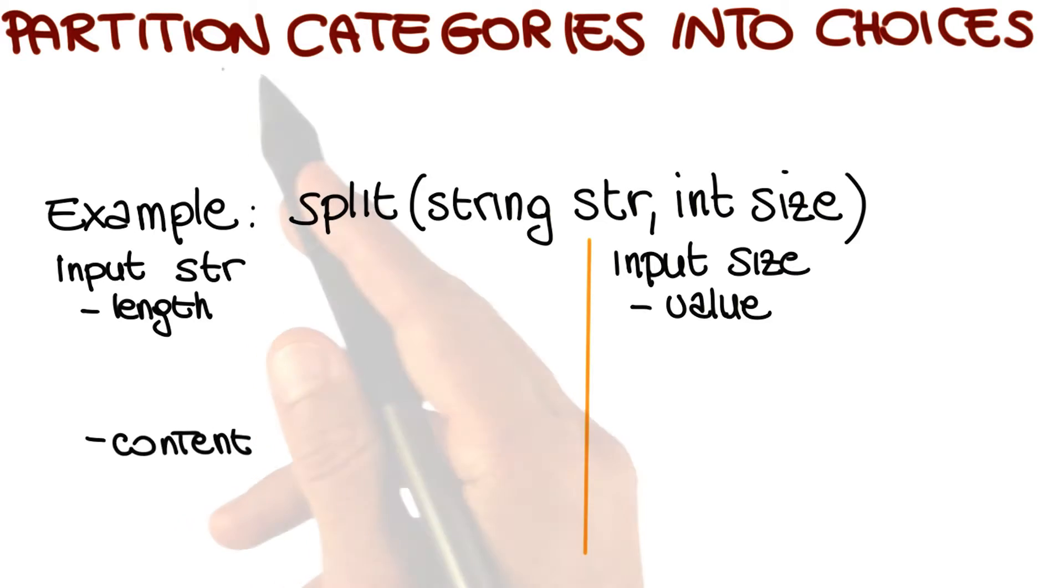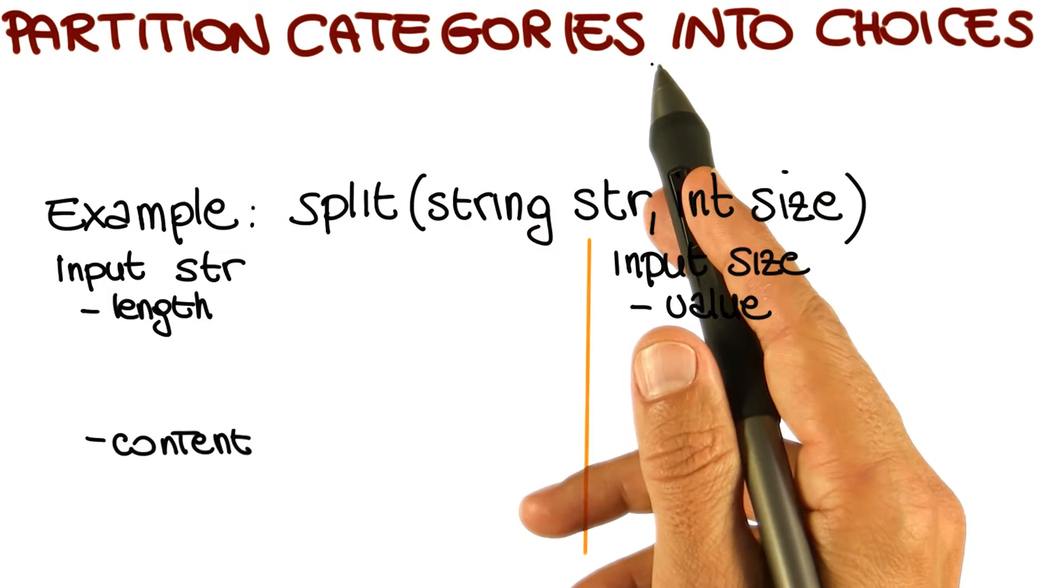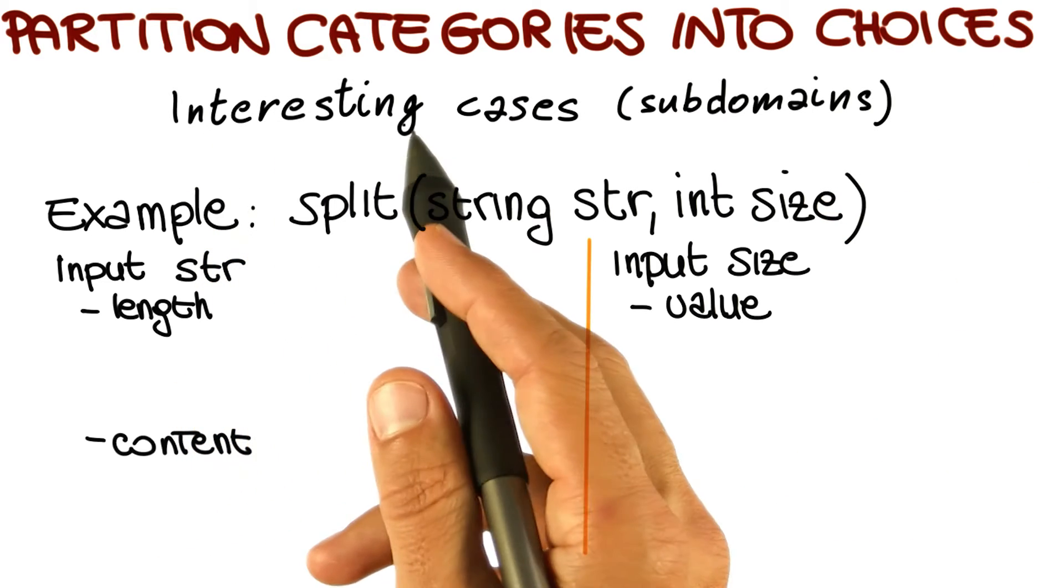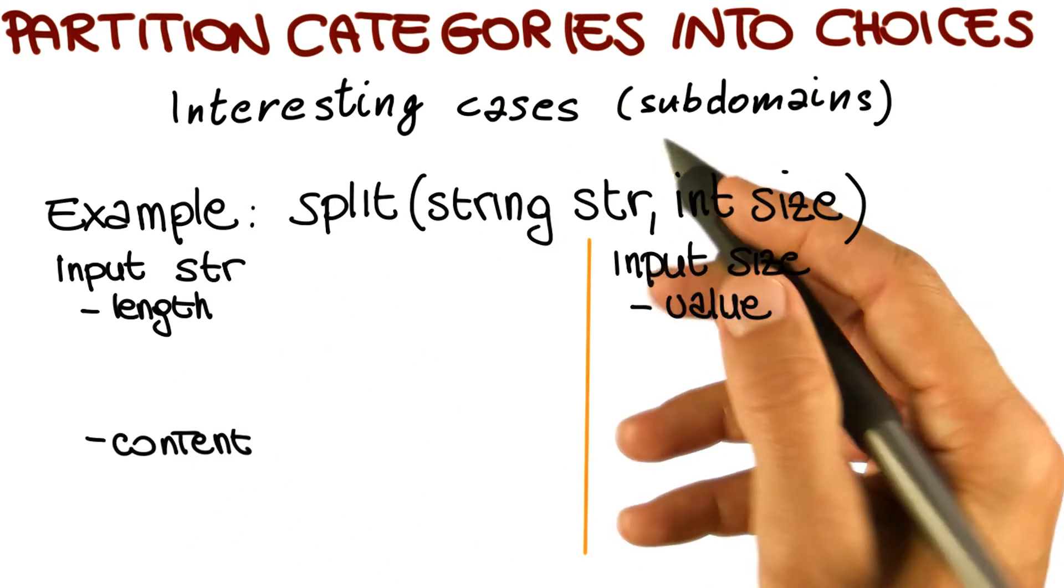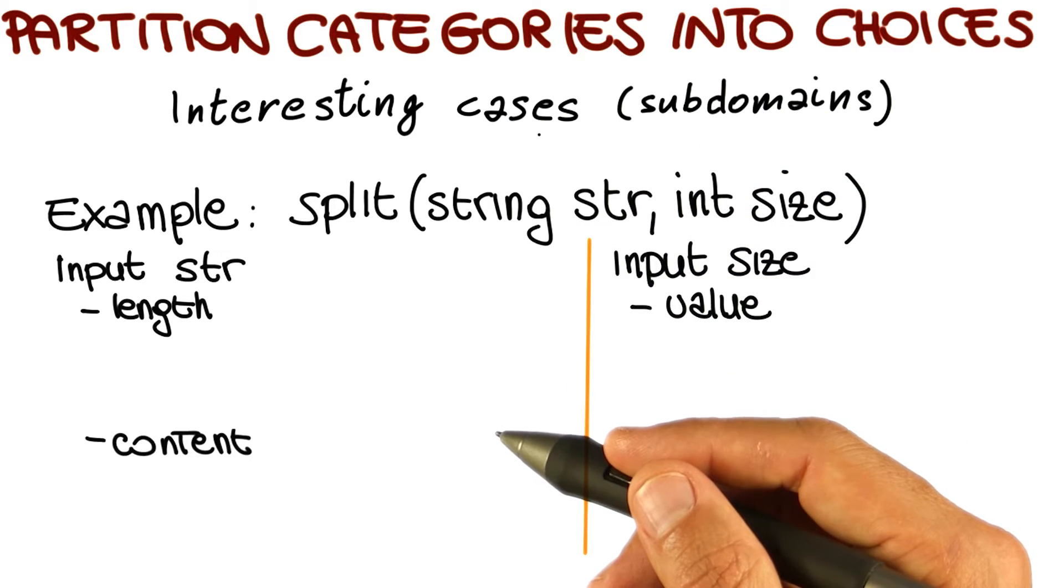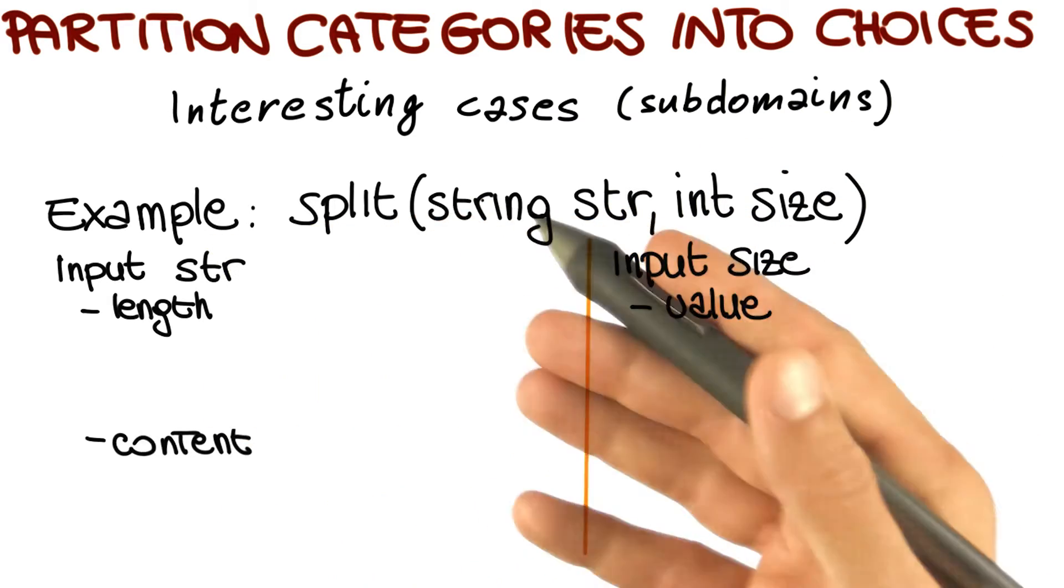Now we move to the next step, which involves partitioning the categories that we just identified into choices. These choices are the interesting cases for each category, the interesting subdomains for each one of these categories. Once more, let's look at that using our example, the split program.